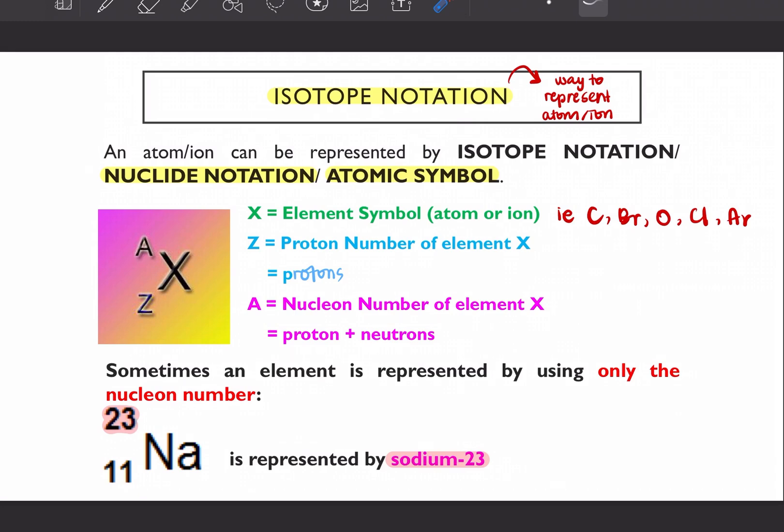Sometimes they call it nuclide notation or atomic symbol. So if the question asks you for nuclide notation or atomic symbol, it is the same as isotope notation. So your isotope notation is written in this form: A, X, Z. So let's look at X first. What is X? X is your element symbol of your atom or ion.